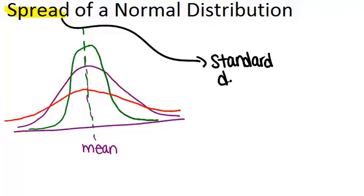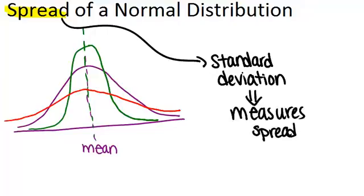And for right now, we're just going to think of the standard deviation as a measure of the spread of the data of a normal distribution. So the larger the standard deviation, the more spread out the data.